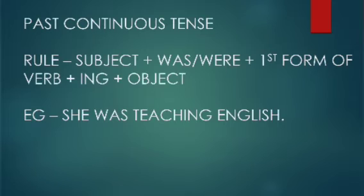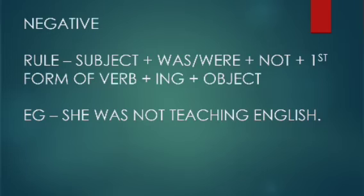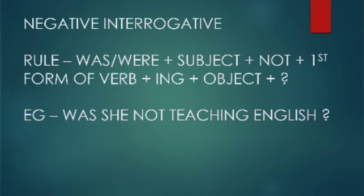Past Continuous Tense. Example: She was not teaching English. Negative Interrogative rule: Was/were plus subject plus not plus first form of verb plus ing plus object plus question mark. Example: She was not teaching English?